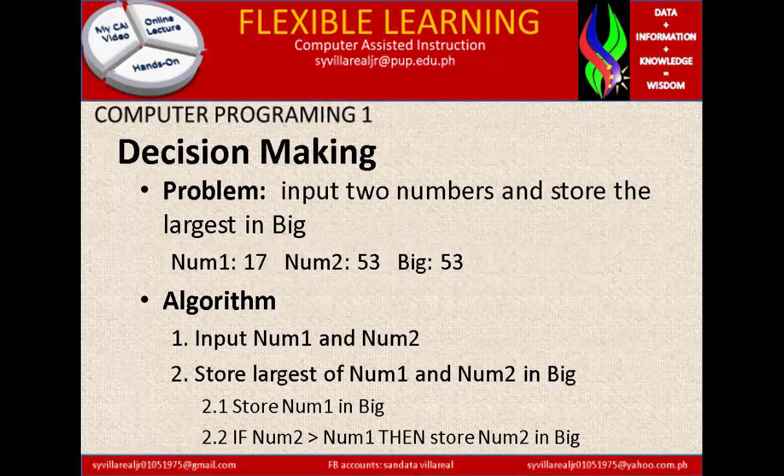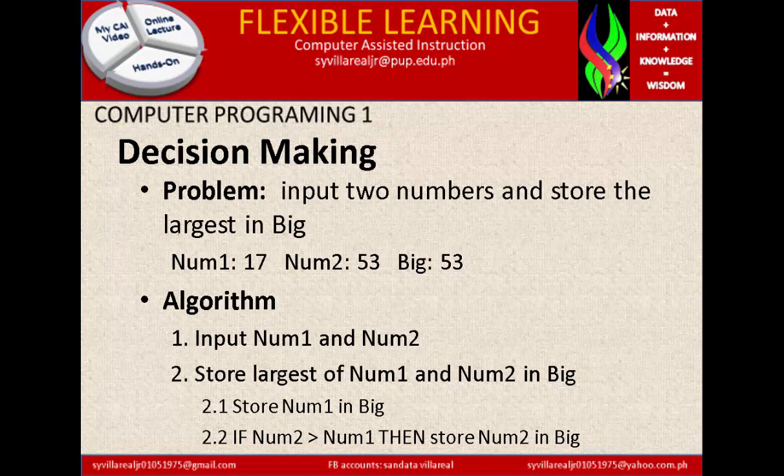Under Decision Making, we have to follow some parts for the process. The first one is the problem, the second one is the algorithm. So under problem, input two numbers and store the largest in big.